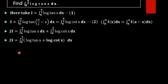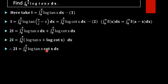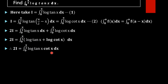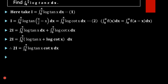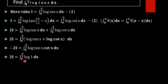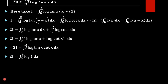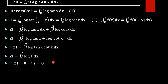Using the log property: log a + log b = log(ab), we can rewrite log(tan x) + log(cot x) as log(tan x · cot x). Since tan x · cot x equals 1, we have 2I equals the integral from 0 to π/2 of log(1) dx. The value of log 1 is 0, so 2I equals 0, which implies I equals 0.